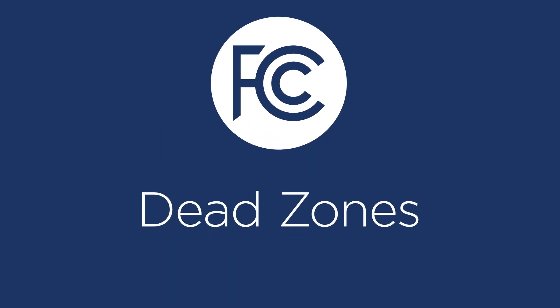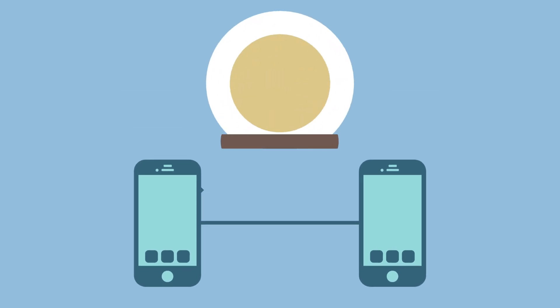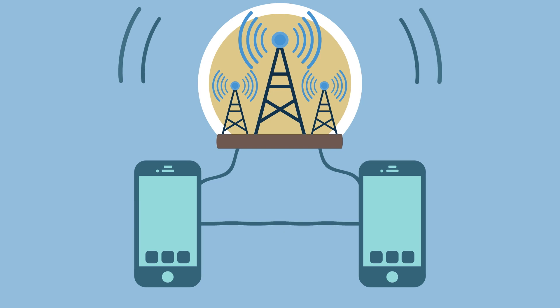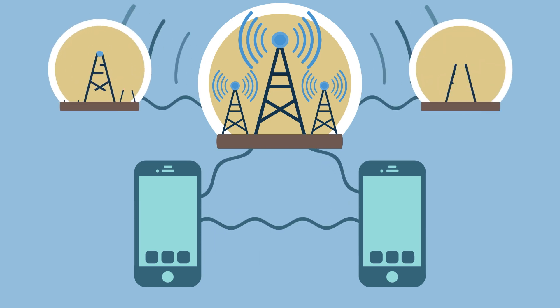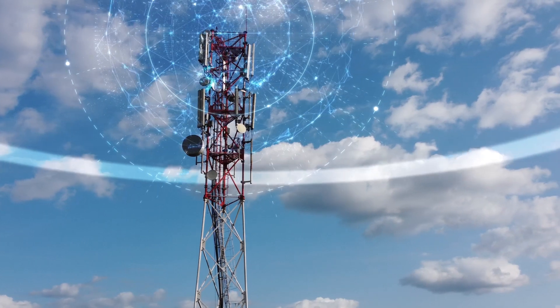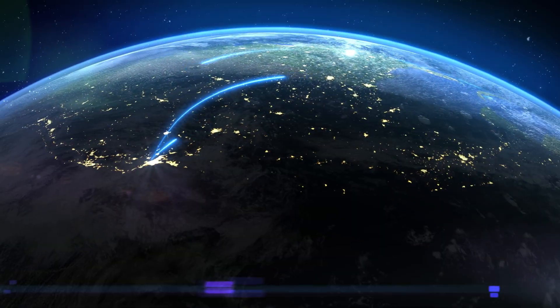What are dead zones? Our cell phones communicate via radio waves, connecting calls using a system of base stations called cell phone sites that allow cell phones to communicate with each other and with other telecommunications networks. Cell site locations collectively establish wireless service providers' network coverage areas.